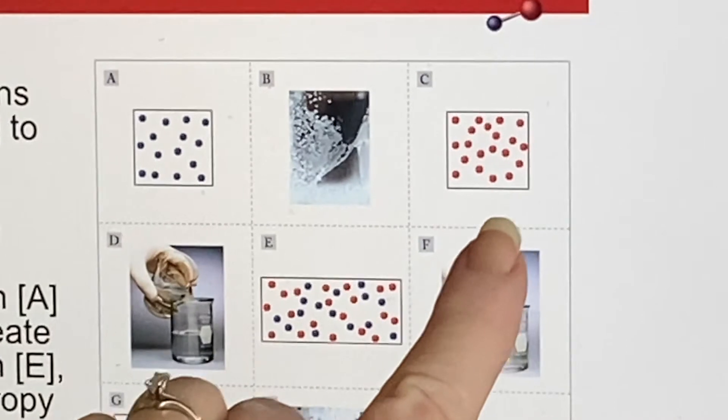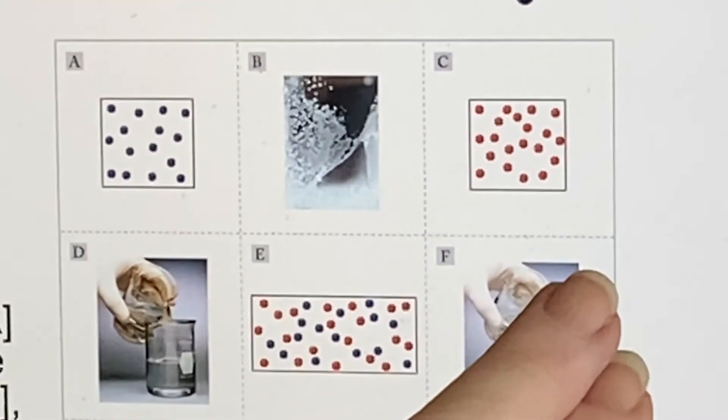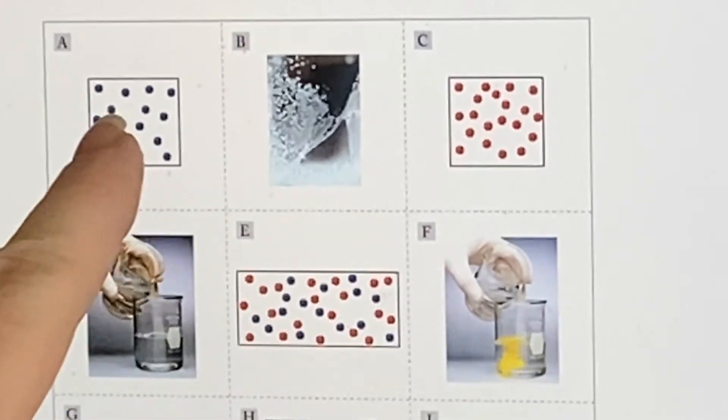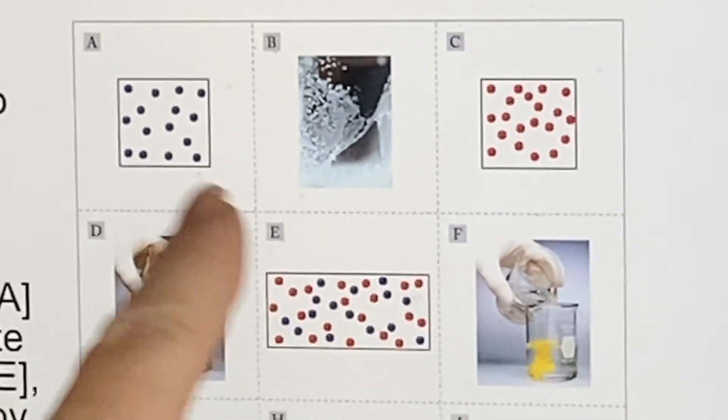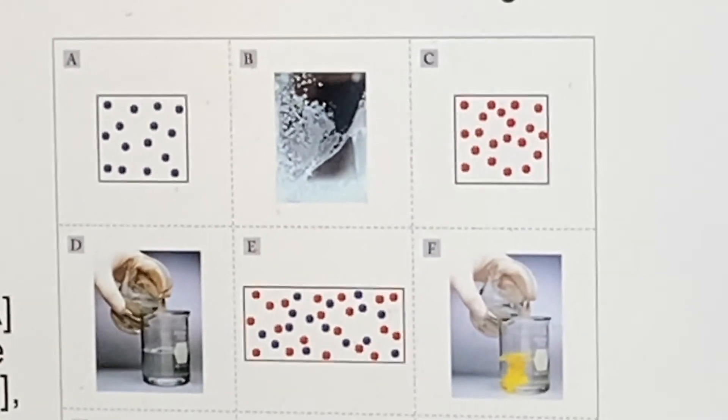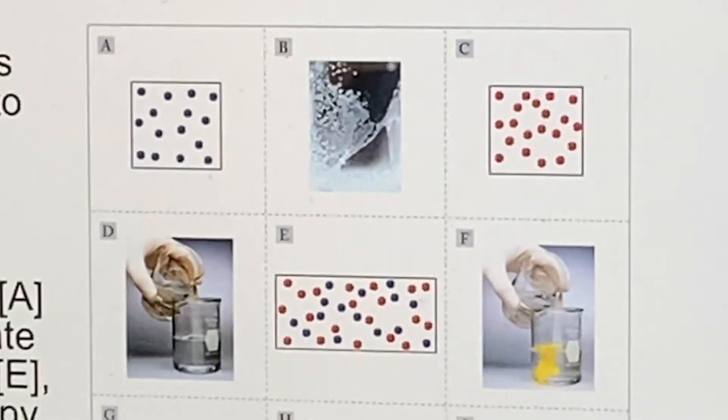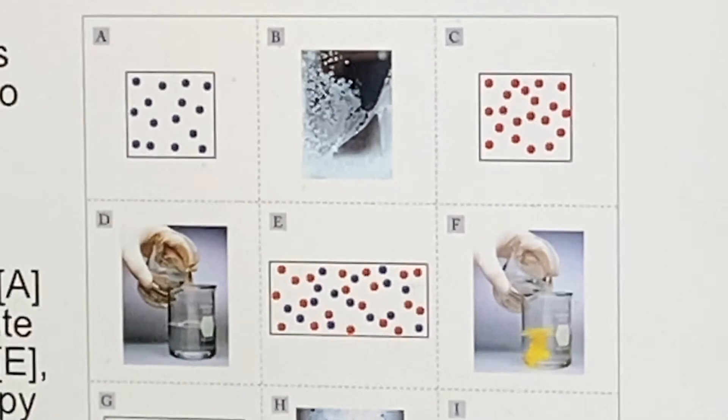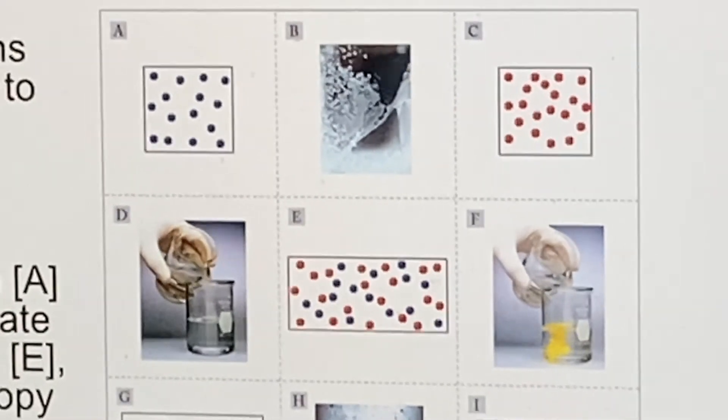These were separated and they were each in their own container. This container looks like it's bigger than either of these. And these things are mixed. So I would say that that looks more chaotic. And I would say that the entropy must have gone up.